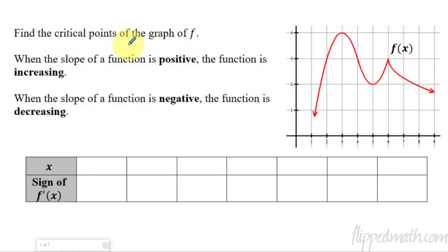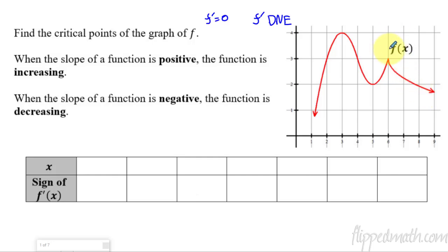First off, we have to always know where a critical point is. As a reminder, a critical point is where the derivative is zero or where the derivative does not exist. So where does that happen on this graph of f of x? That's going to happen when the derivative is zero here, when the derivative is zero here, or when the derivative does not exist because it's a corner.